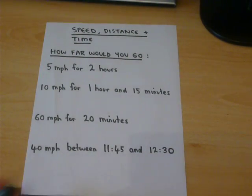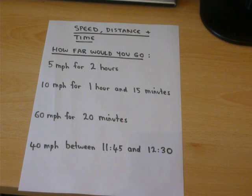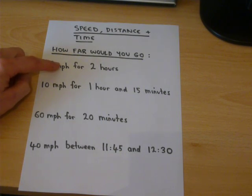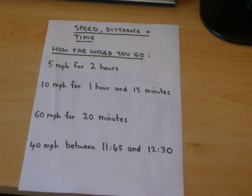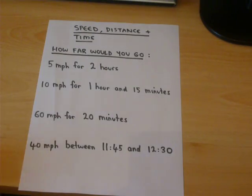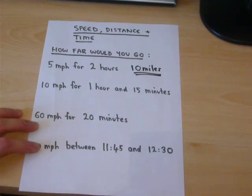Problems involving speed, distance and time are all about logic. For example, if you're told someone travels at 5 miles per hour, that means every hour he travels 5 miles. So in 2 hours this person would travel 10 miles — 5 in the first hour, 5 in the second hour, 10 miles in total.